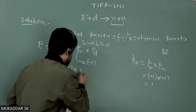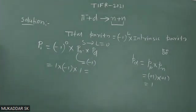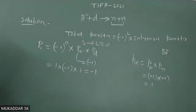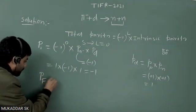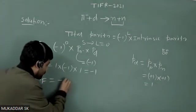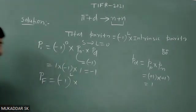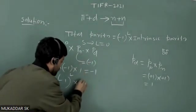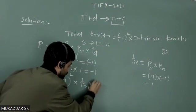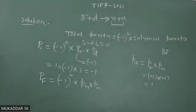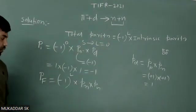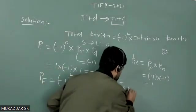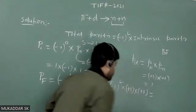Now we will calculate the total parity of the final state, denoted by P_f. That should be equal to its orbital part, which is minus one to the power L, where L is the total orbital quantum number of the final state. Then we take the intrinsic parity of each component — that is P_n times P_n. Since neutrons are fermions, their intrinsic parity is plus one, so P_f becomes minus one to the power L times plus one times plus one, which simplifies to minus one to the power L.